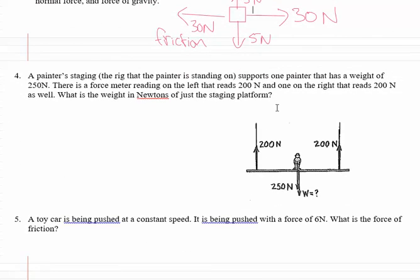For number four we have a painter's staging. That's this whole rig thing. It's this rig that the painter is standing on, and that rigging supports the painter that has a weight of 250, so that's our painter's weight. There's a force meter on the left that reads 200 and one on the right, so there's something pulling up on this thing with a combined total of 400 newtons up, and it wants to know what is the weight of just the staging platform.